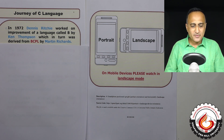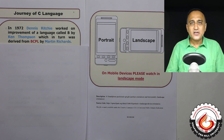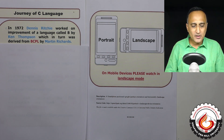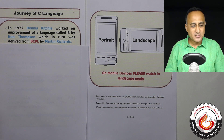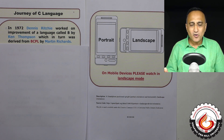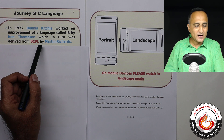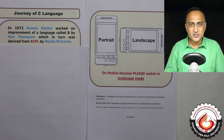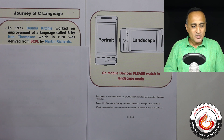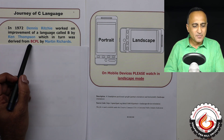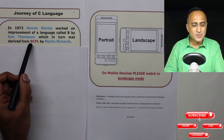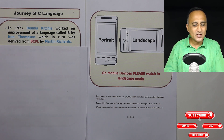In 1972, Dennis Ritchie started to work on the improvement of a language called B. B was being developed by Ken Thompson, and the major development aspects of the B language were derived from a language called BCPL by Martin Richards. BCPL stands for Basic Combined Programming Language. The name C is not something special — Dennis Ritchie started improving B, and the next alphabet he saw was C, so he gave it the name C.